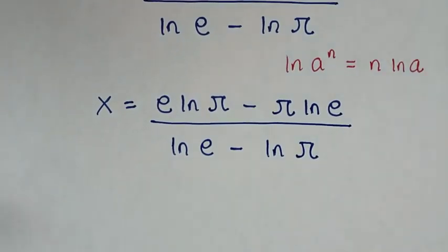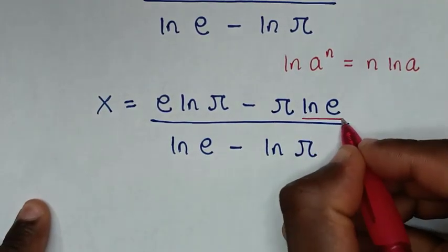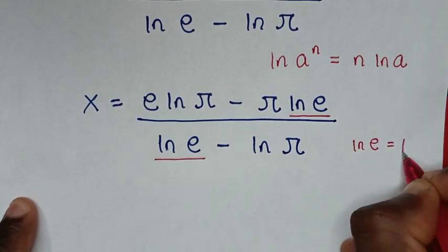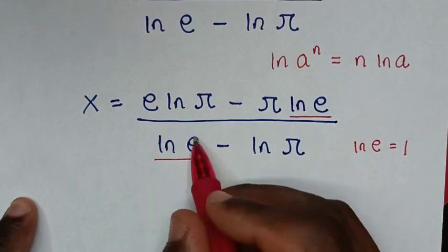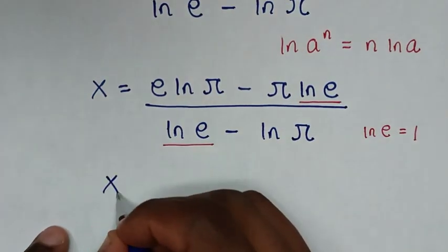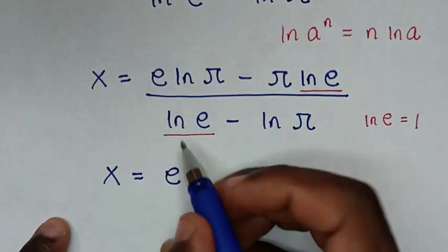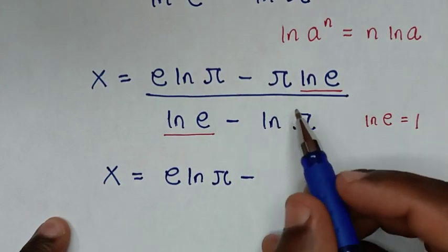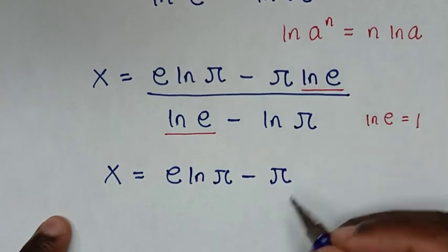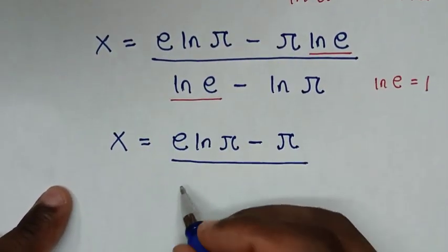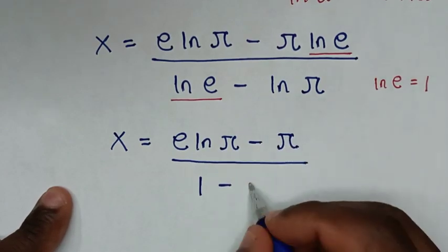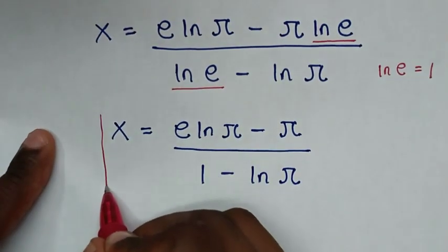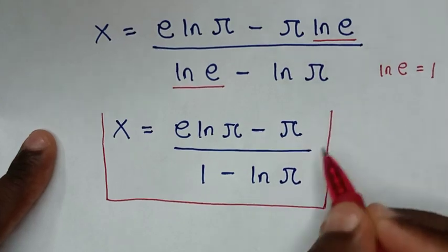Since ln(e) = 1, we substitute 1 wherever ln(e) appears. The final answer is x = (e·ln(π) − π) / (1 − ln(π)). Therefore this is the final answer for the value of x in this problem.